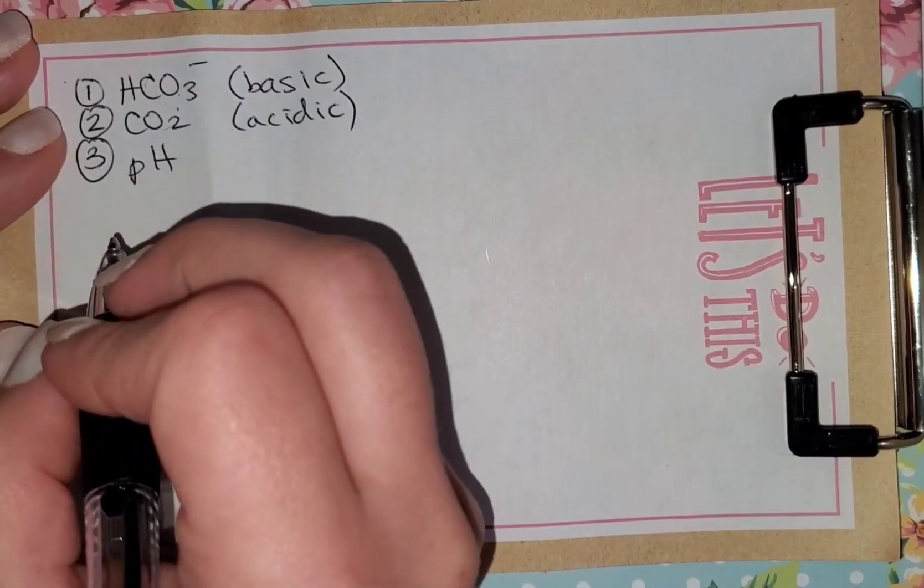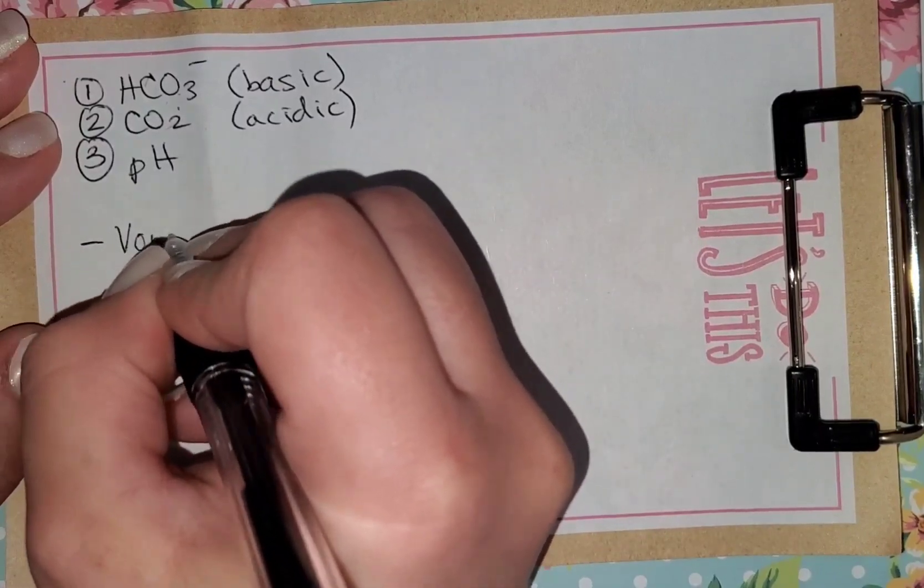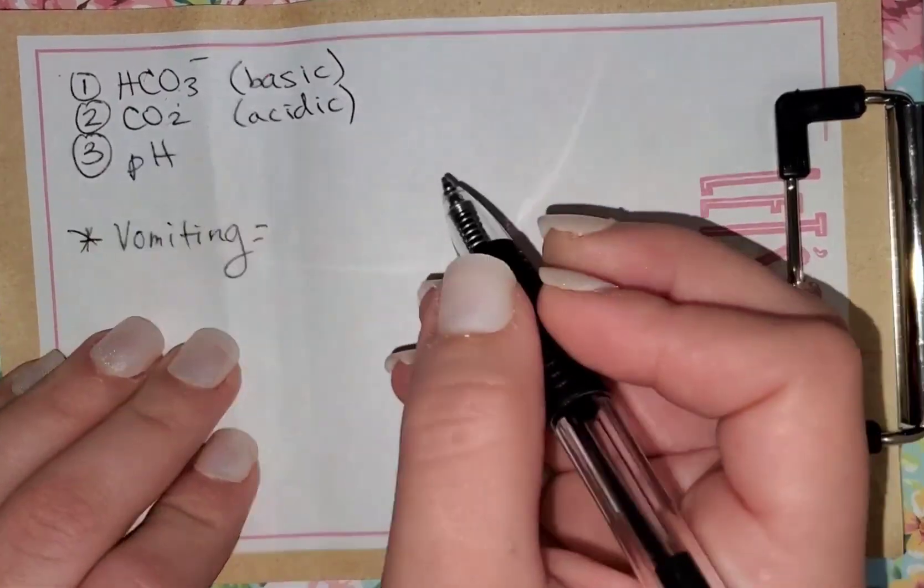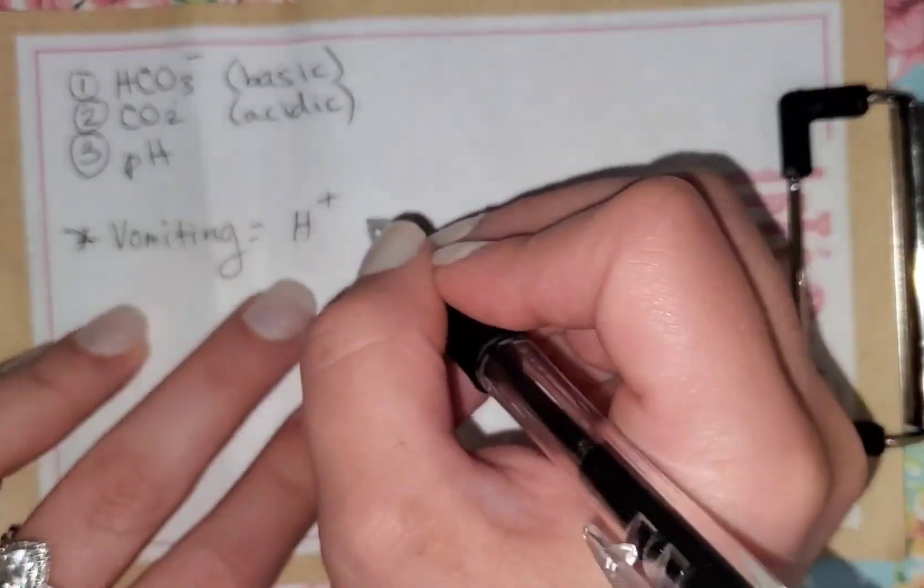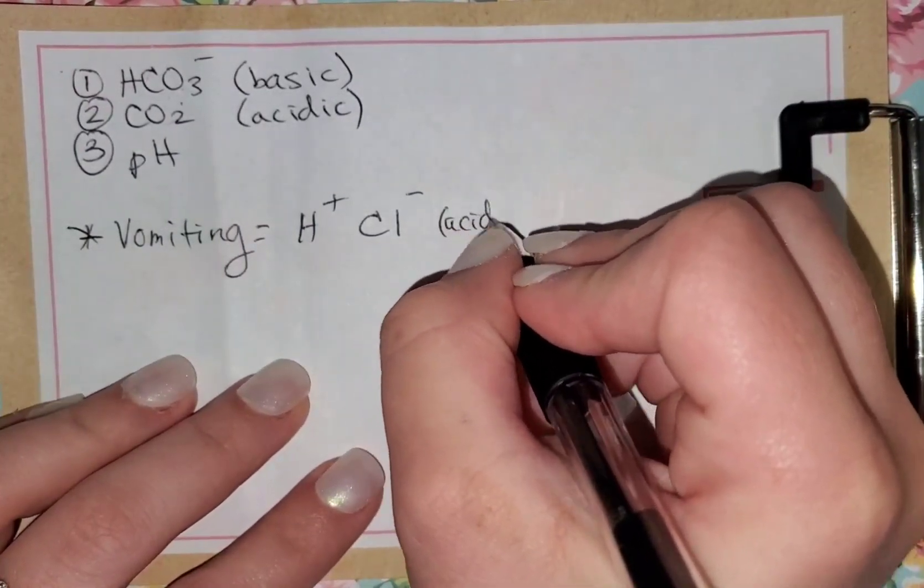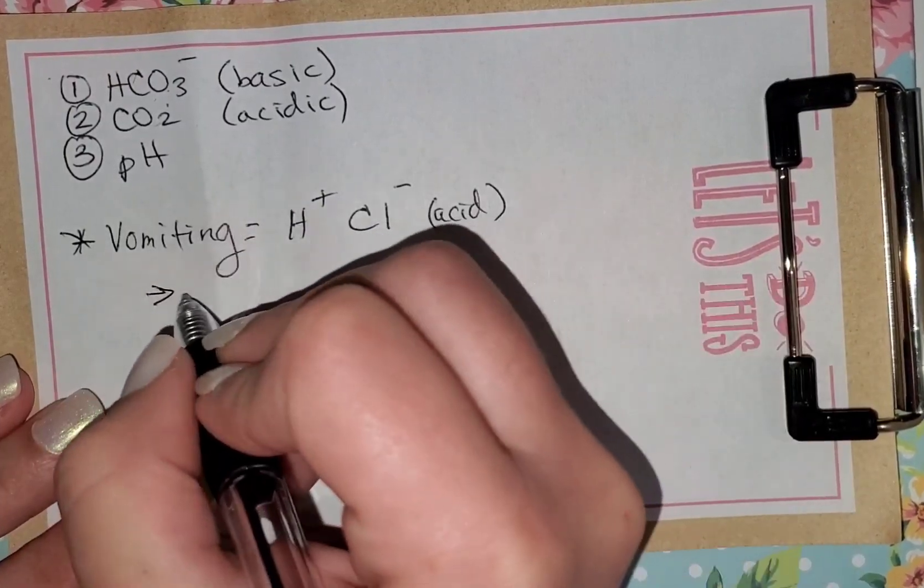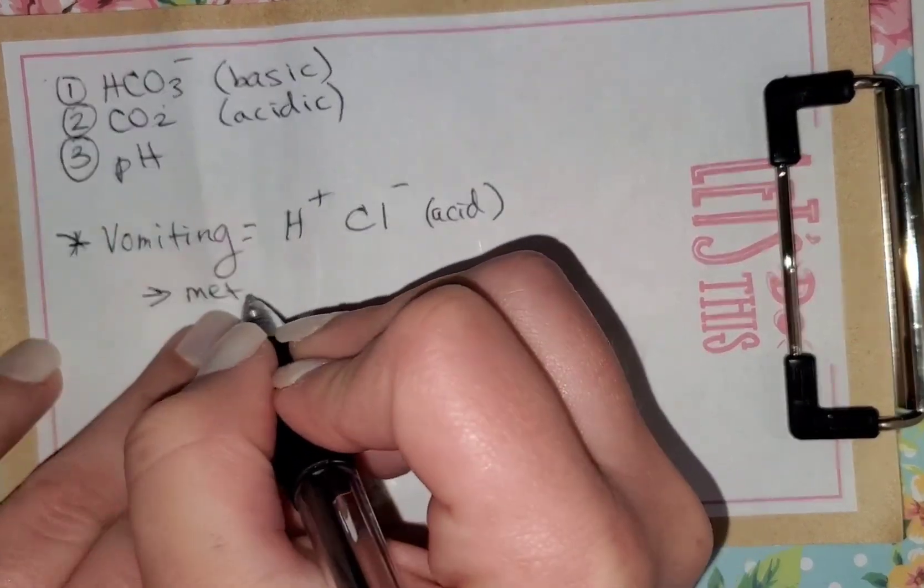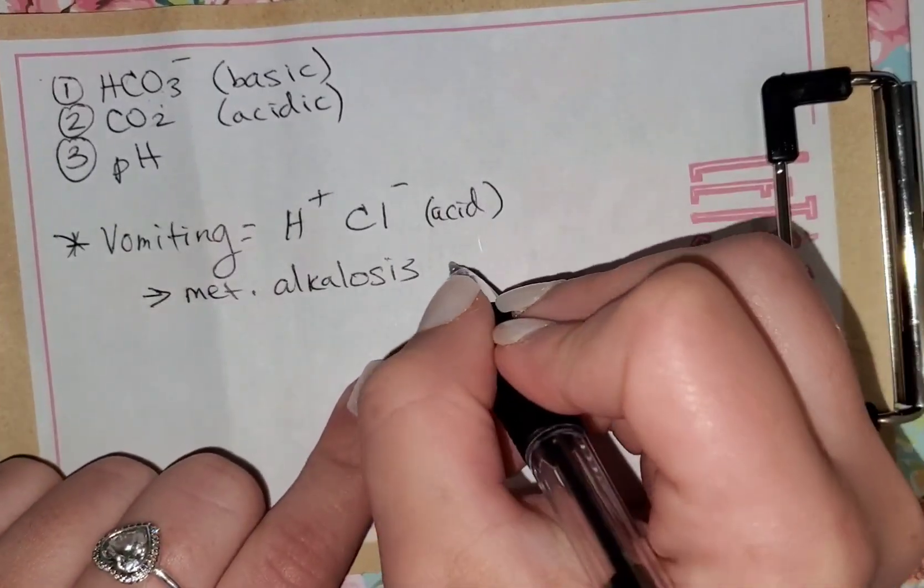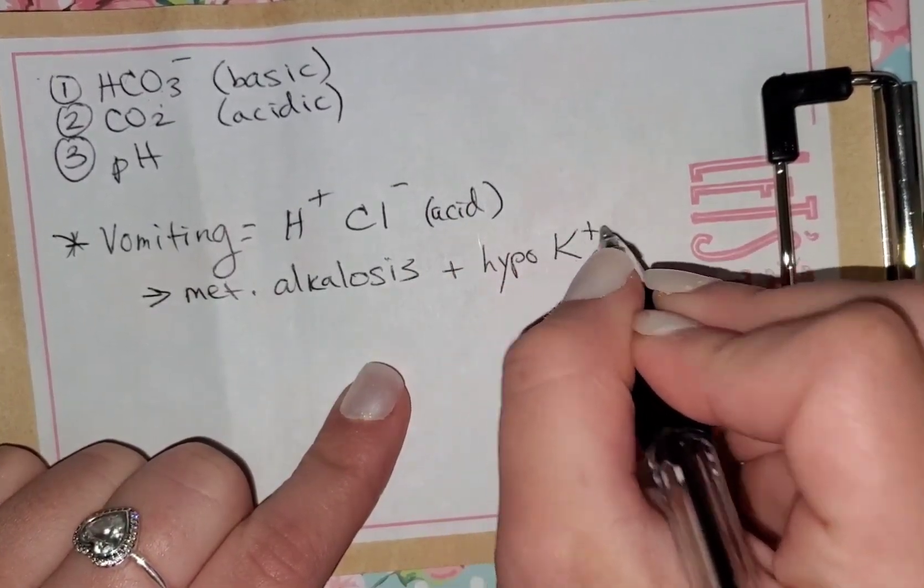So let's say in the case of vomiting, for example, these are different scenarios that also show up. So vomiting, you need to think about what are you losing. So you're losing protons and you're losing chloride, HCl, which is the acid in your stomach. So these things are acidic. So what would you expect to be having? Since you're losing acidic, you would be expecting to have a metabolic alkalosis plus you're dehydrated, so you're going to have hypokalemia.